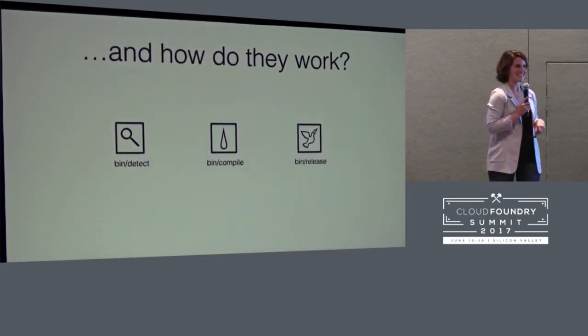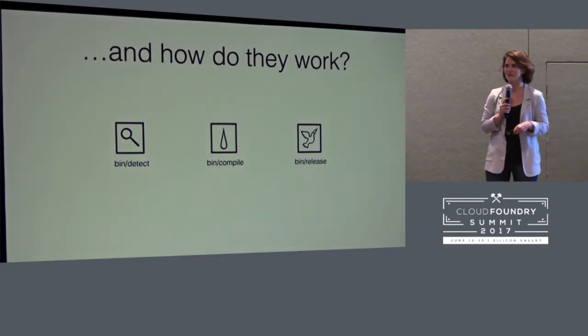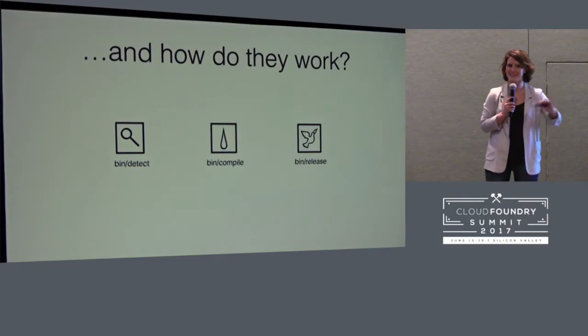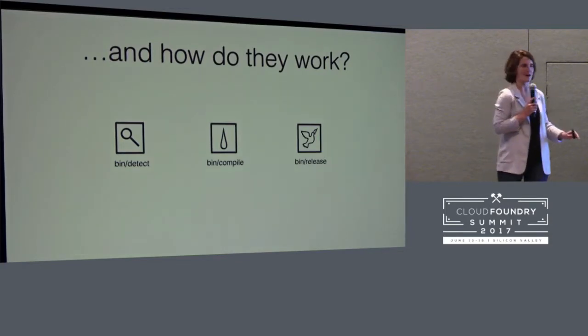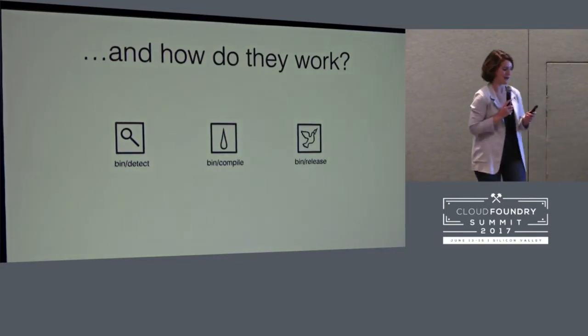Once the app has been nearly entirely staged and set up in the staging environment, it passes it off to the bin release script. We looked at the documentation today — we say that it passes metadata to the runtime, and I don't think that's the clearest way to say that at all. What it really does is write the default start command that the droplet is going to use. Everything is just in compile.